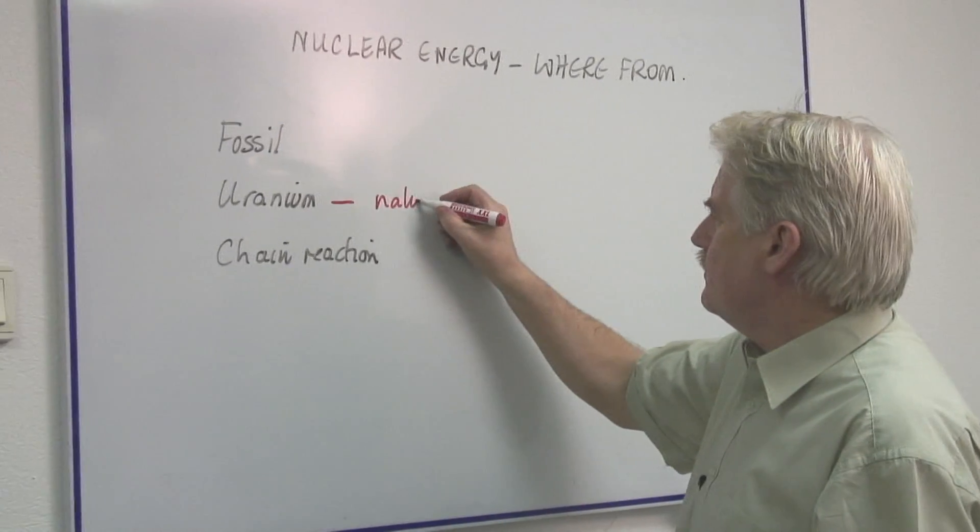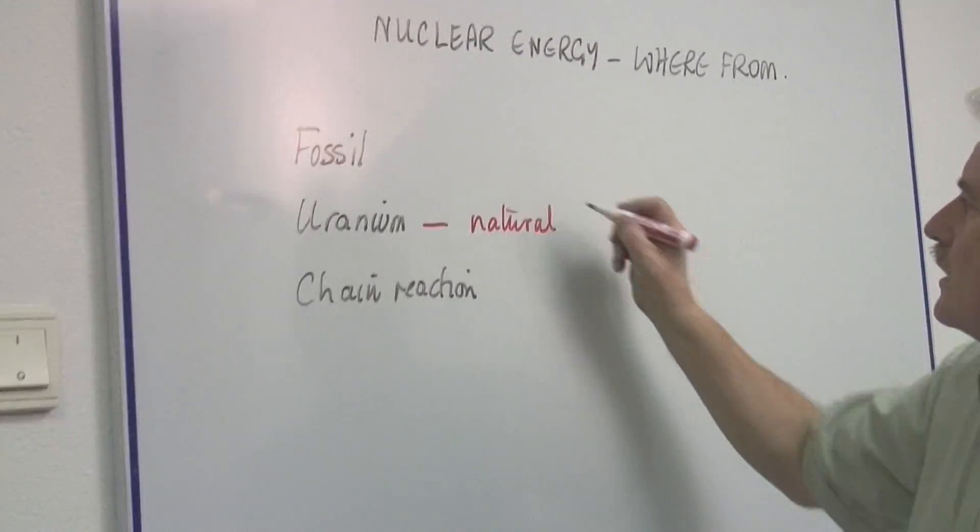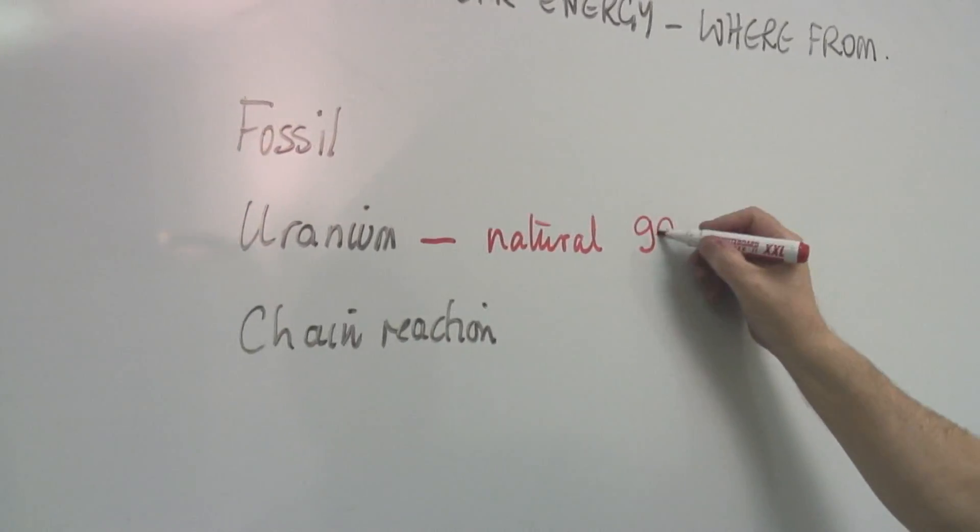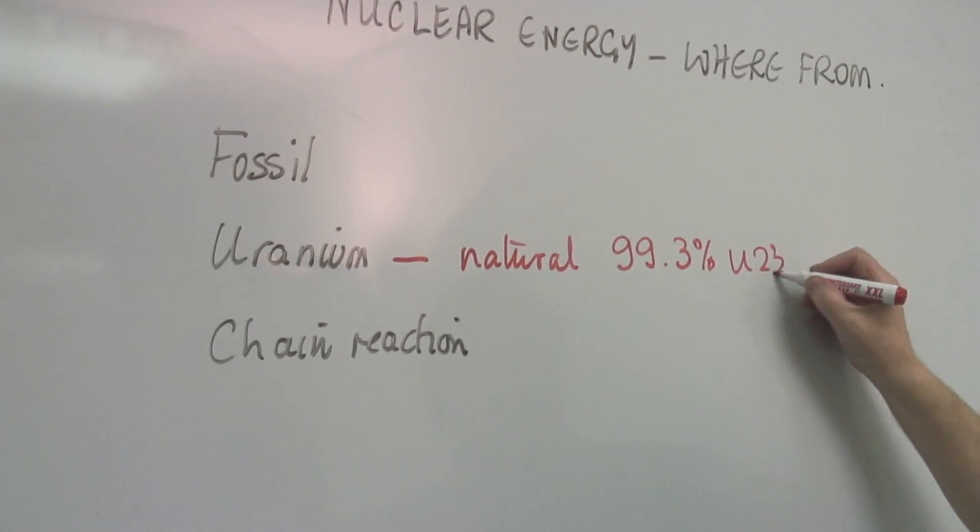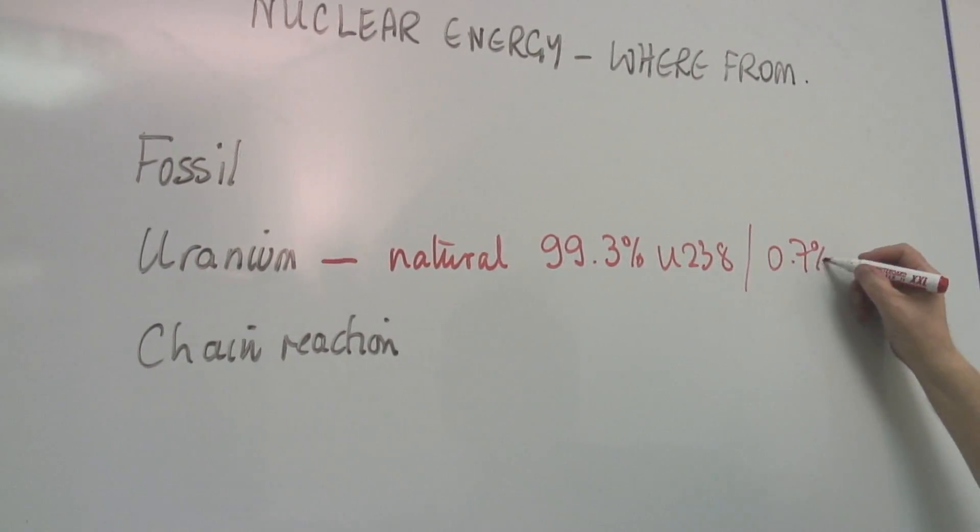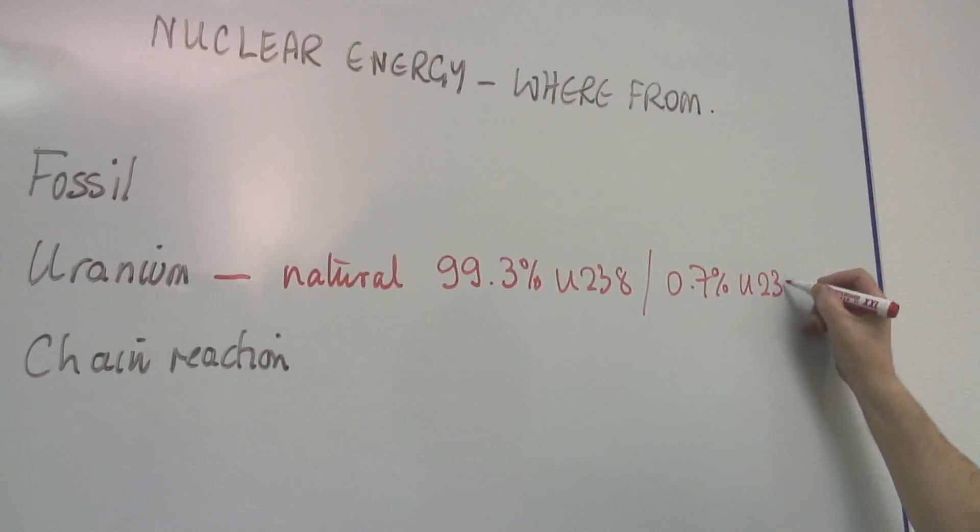Natural uranium is about 99.3% uranium-238 and about 0.7% uranium-235.